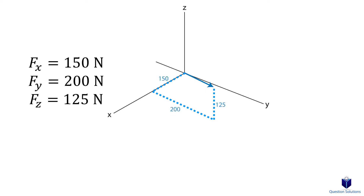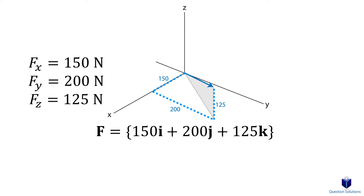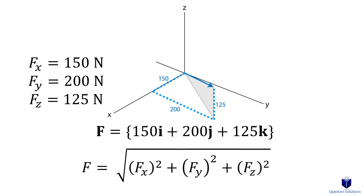When we write a force in cartesian form, we use I, J, and K components, also called cartesian unit vectors. The X component is written using I, the Y component using J, and the Z component using K. To find the magnitude of a cartesian vector, we take each term, square it, add them all together, and then take the square root. This will become much clearer with examples.